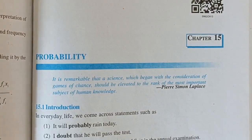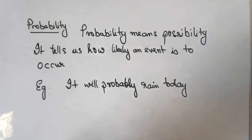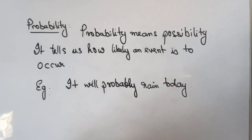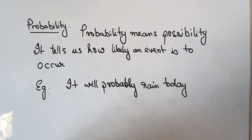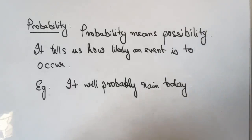Welcome back students. Today in the session we are going to study chapter number 15: Probability. Let us first try to understand what the word probability means. Probability means possibility — it tells us the chances of an event occurring. For example, 'it will probably rain today' suggests it may or may not rain, but we are predicting rain based on our past experience.